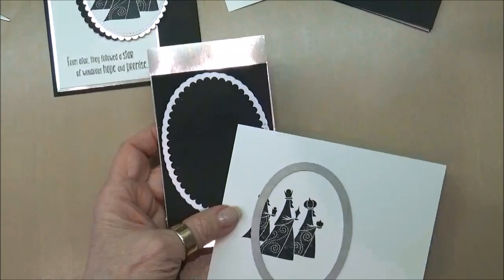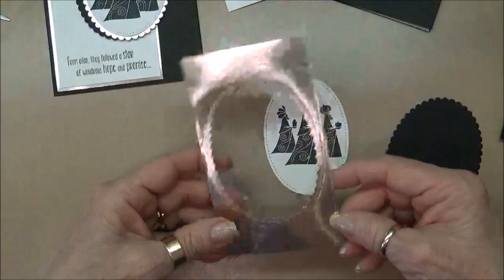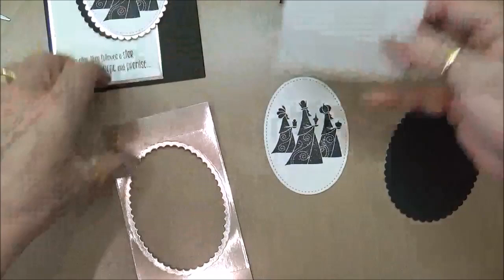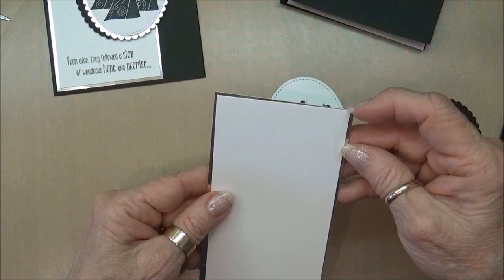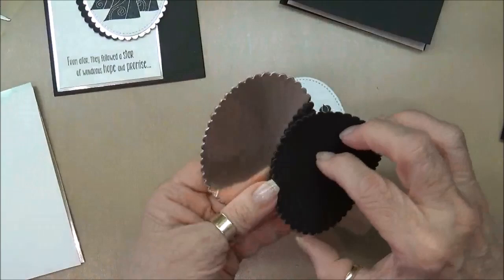Okay I'm back with my products so here is my image of the Wise Men and here is my champagne foil and this will be layered underneath the shimmery white cardstock. This will go right on here just like this and then the black. There we go.